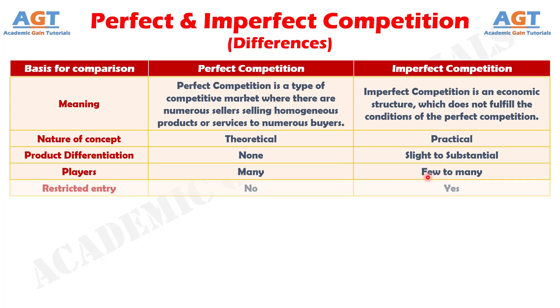Number five: in perfect competition there are no barriers to the entry and exit of the firms, which is just the opposite in the case of imperfect competition.